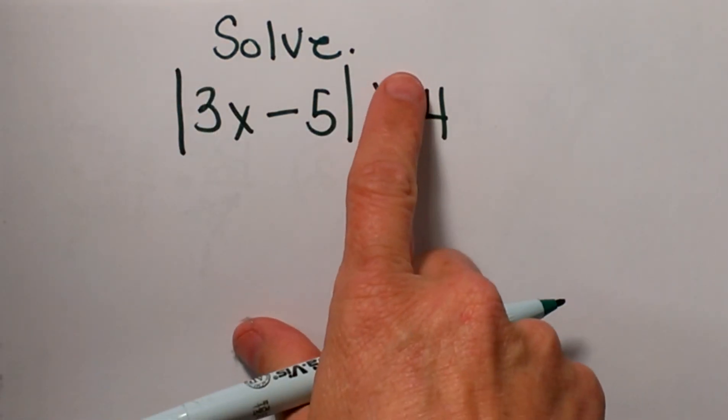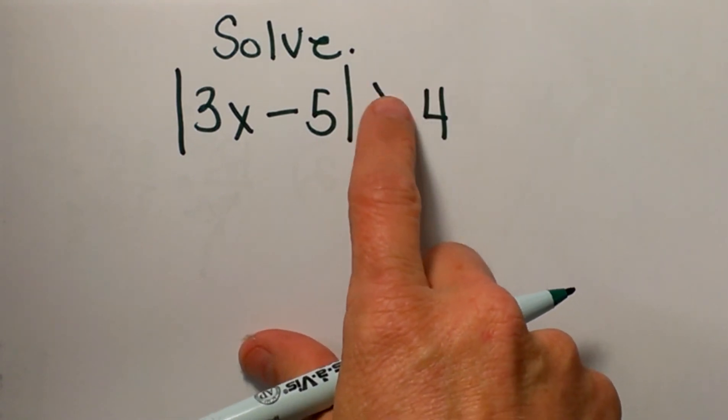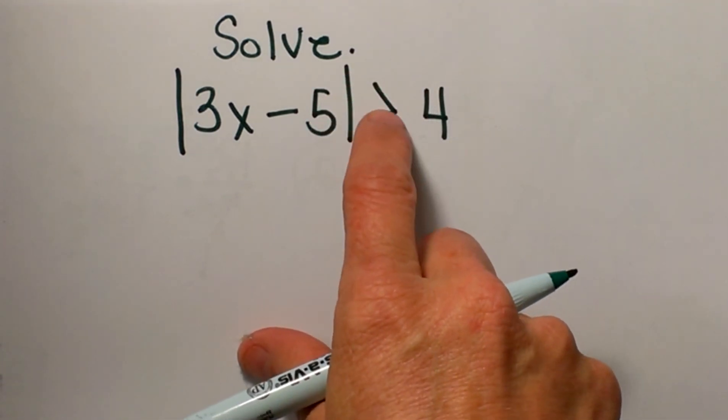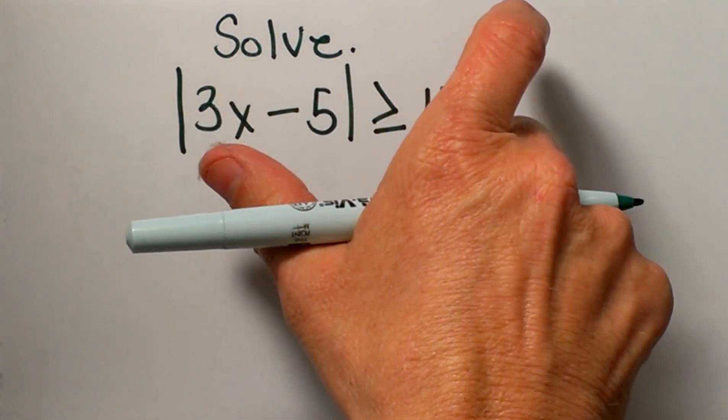The first thing I want to do is look at my inequality sign, and this is a greater than symbol. Typically, a greater than symbol means this is an 'or' problem, which means I am going to shade outward on my inequality.